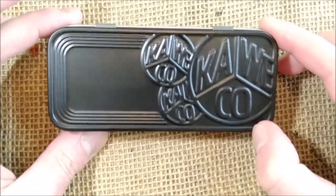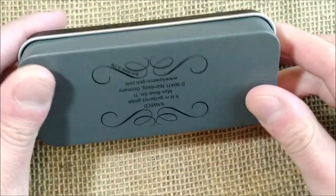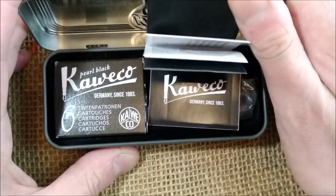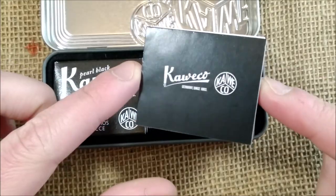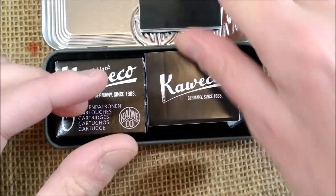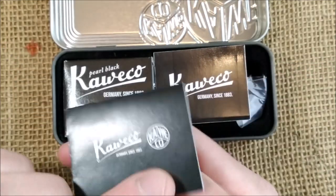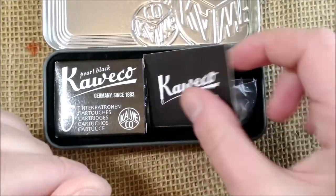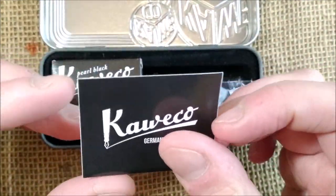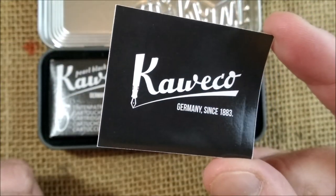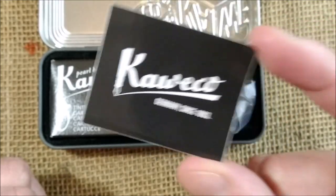Here we have the box. It comes inside this black tin box and we will open it. Inside we have the leaflet. It is the usual one but has a different design now. It is black. Instead of the bright silver shiny sticker of Kaweco, this one has a black one.